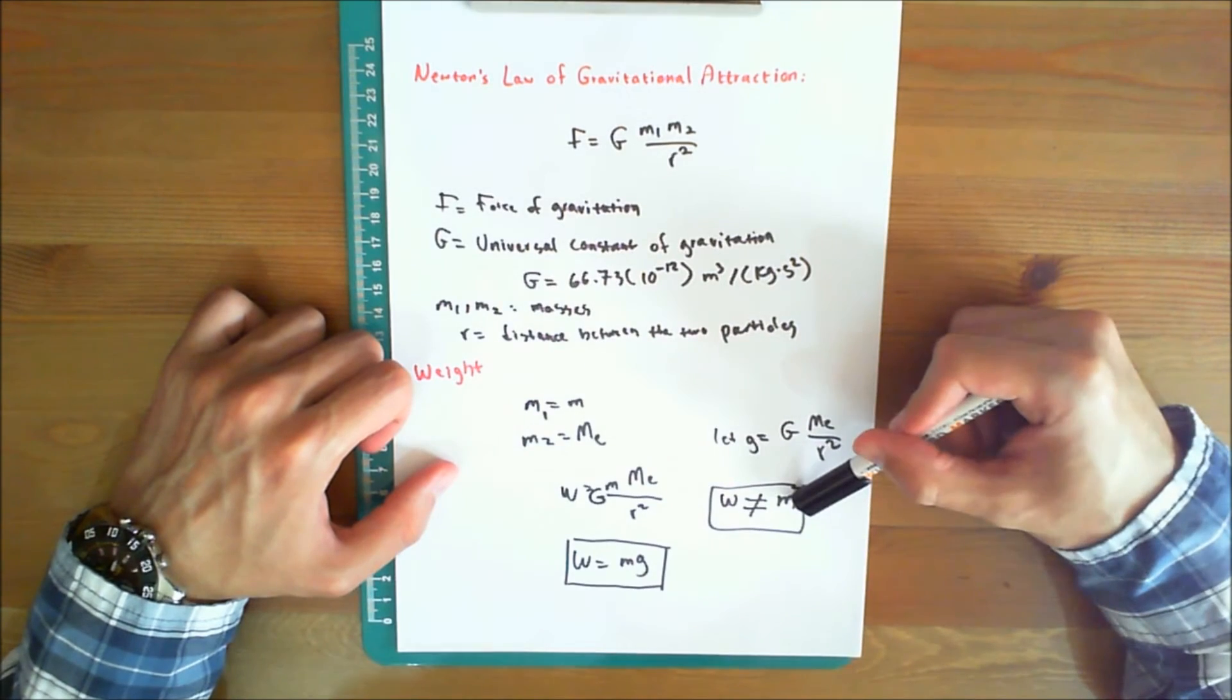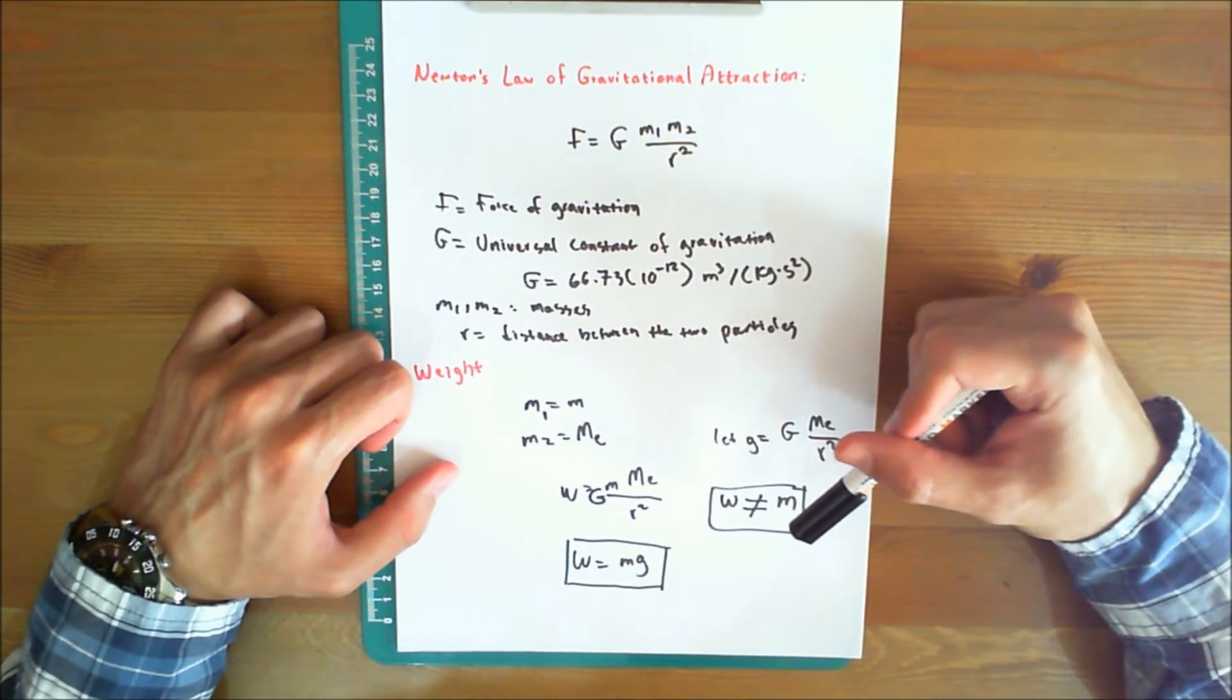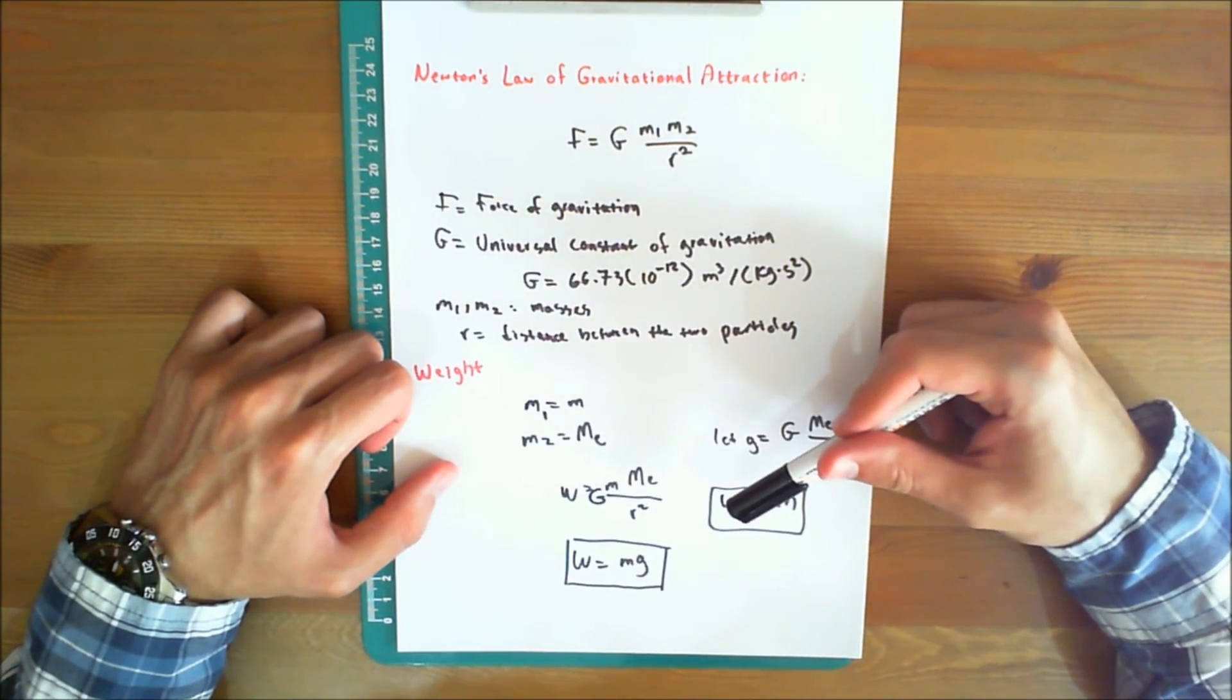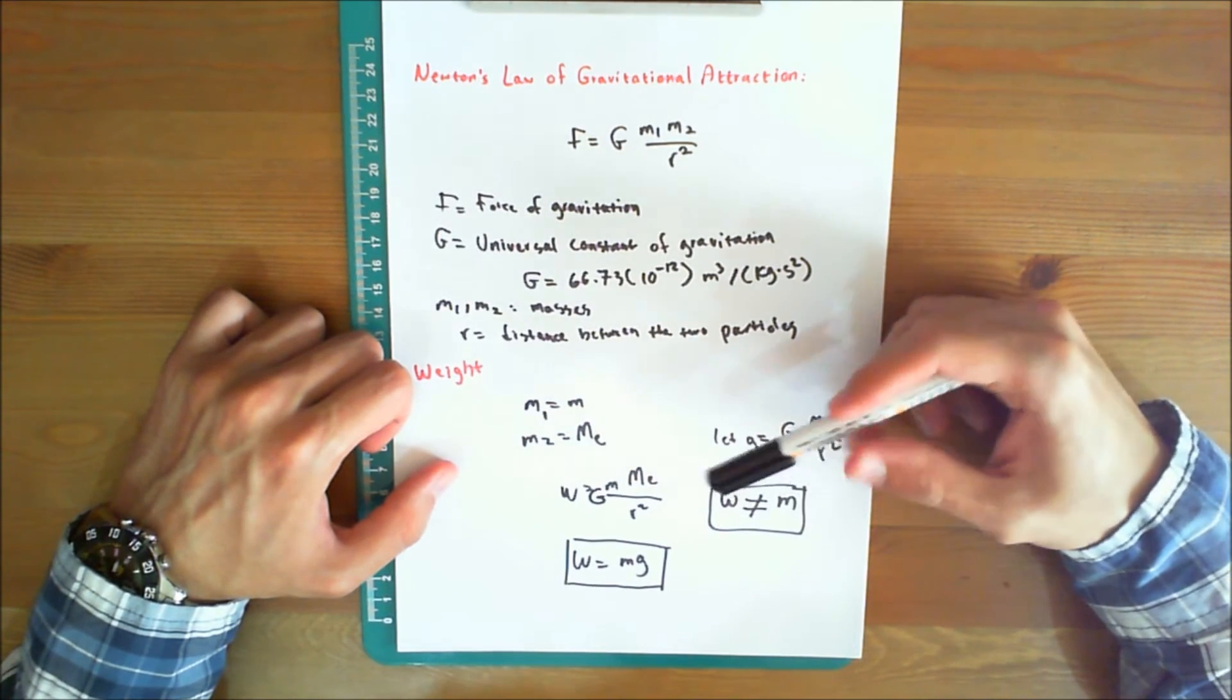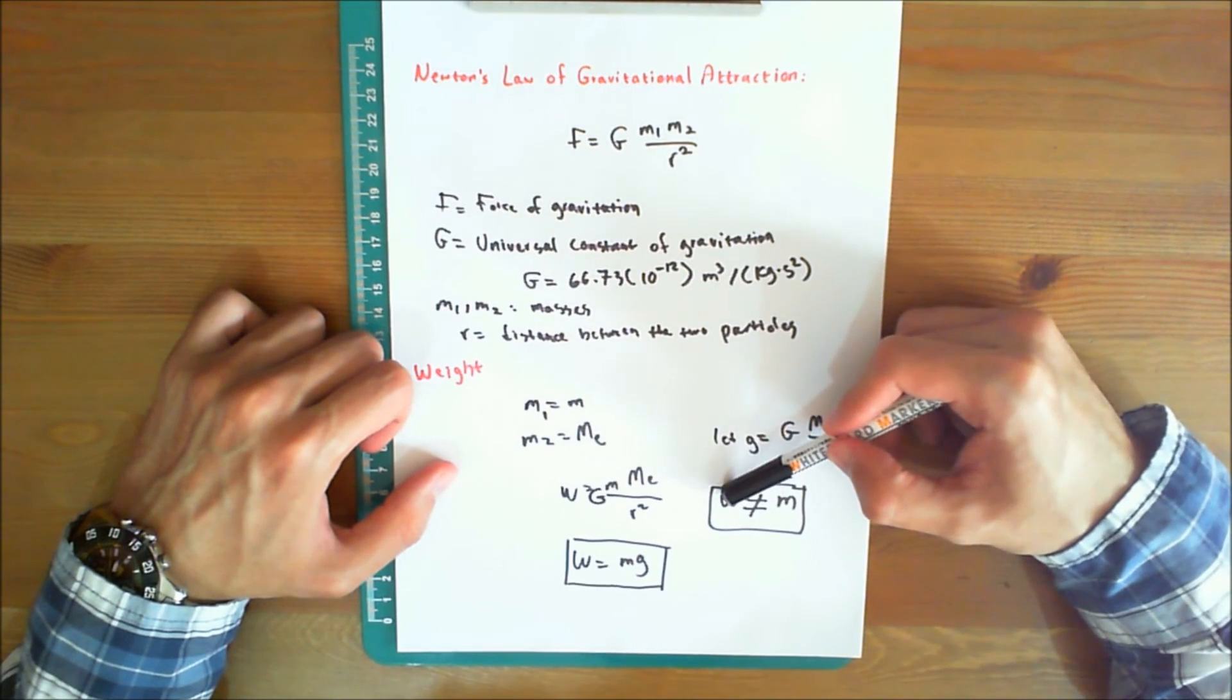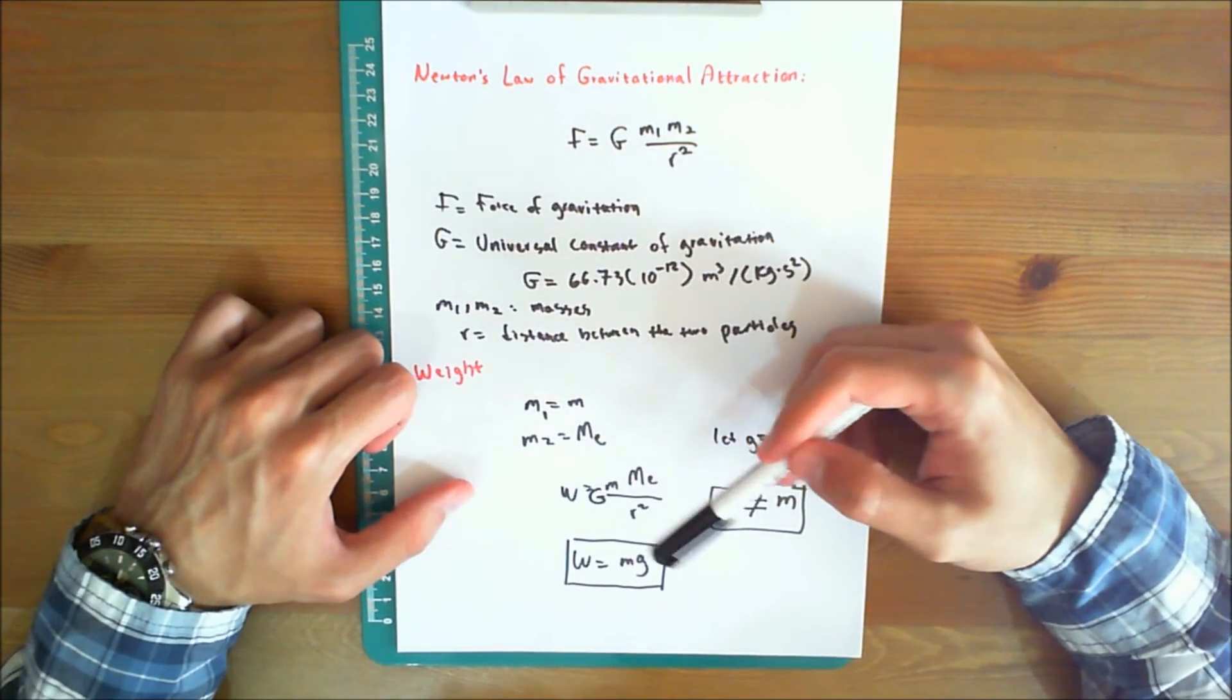One important concept to keep in mind is that the weight is not the same as the mass. Weight and mass are two separate concepts. Although they are used interchangeably in science, however, weight is a force and mass is a scalar quantity. Weight is a vector quantity. So your weight on the surface of the Earth is not the same as your weight on the surface of the Moon. By comparison with F equals mA, we term g the acceleration due to gravity.